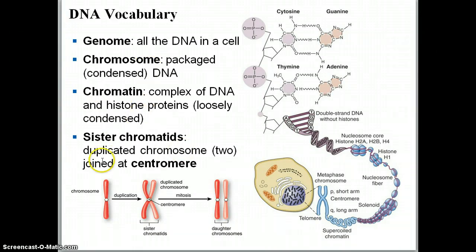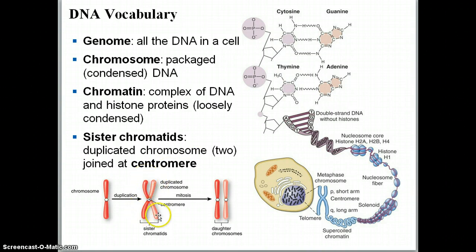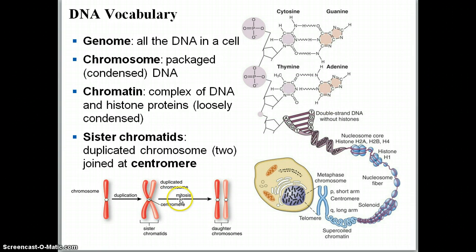Another thing we're going to be talking about today are sister chromatids. Sister chromatids are duplicated chromosomes that are joined together. Note that two chromatids make up a sister chromatid — it is one chromosome, two chromatids, duplicated. When they separate through the process of mitosis, they will become daughter chromosomes, changing from being chromatids to being chromosomes when they are fully separated.